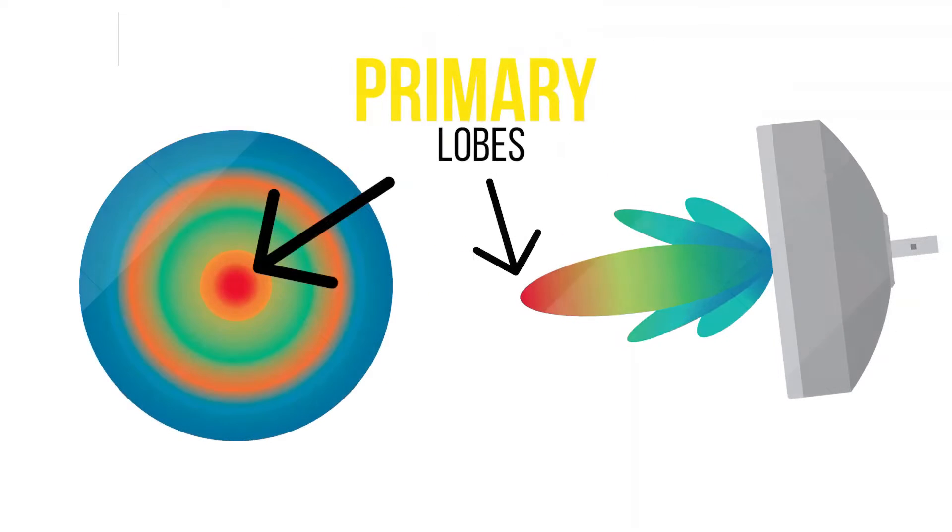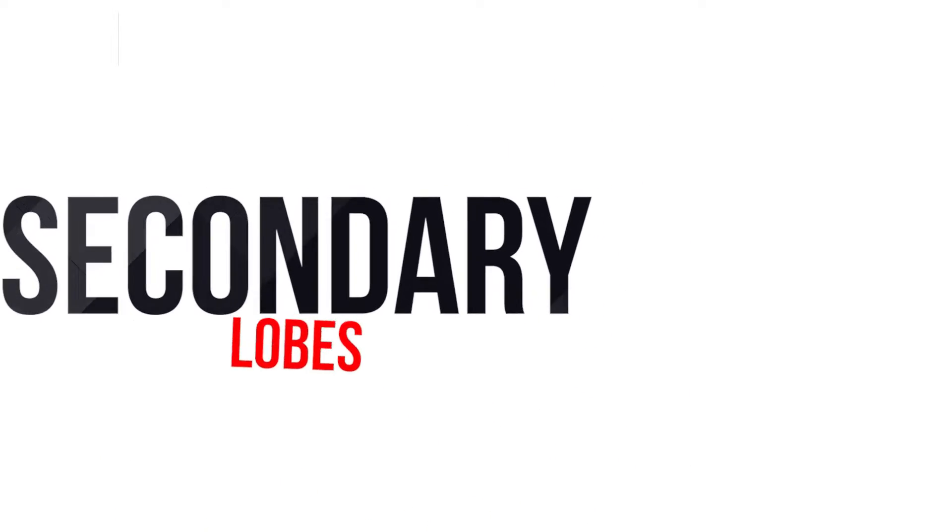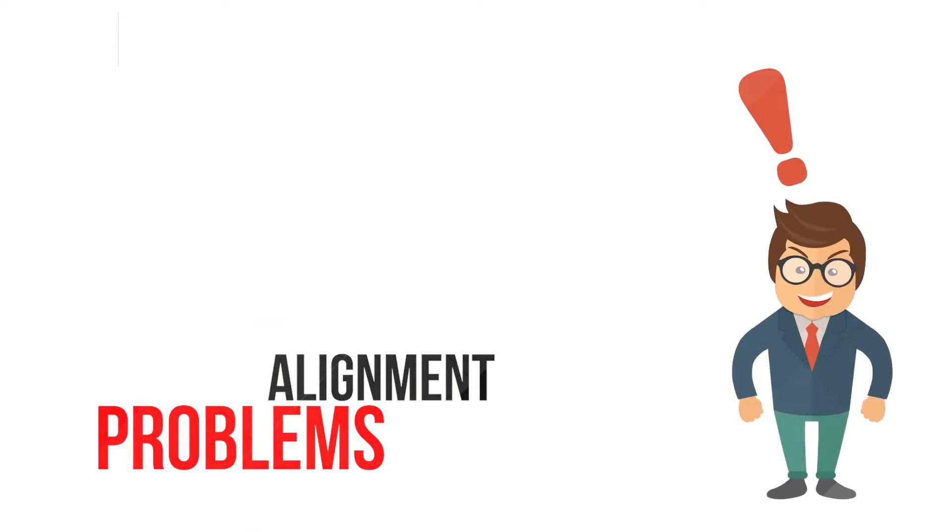Antennas have primary lobes and secondary lobes. Secondary lobe alignment issues can affect only one antenna or both.